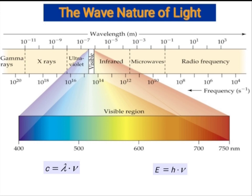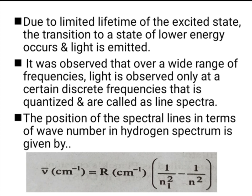From left to right, the wavelength increases and is given in meters. The frequency increases from right to left. The energy equation is E = hν, where ν is the frequency given by C/λ and λ is the wavelength. Due to the limited lifetime of the excited state, transitions to a state of lower energy occur, light gets emitted, and it is observed that light is emitted only at certain discrete frequencies — that is, quantized — and these are called a line spectrum.